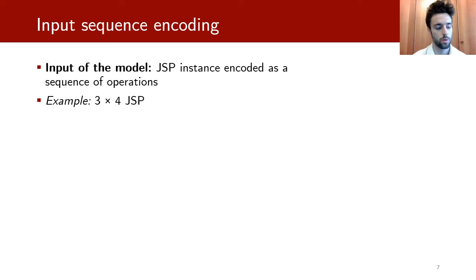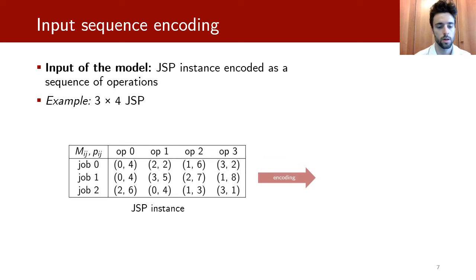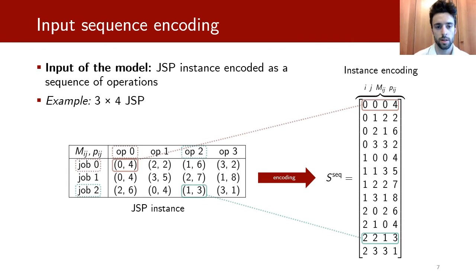Now, I'm going to present how we encoded the input of the problem. Here you can see an example of a JSP instance and its representation. You can see that each operation has been mapped to a row of the instance encoding, which has four elements: the index of the job, the index of the operation, the index of the machine, and the processing time.